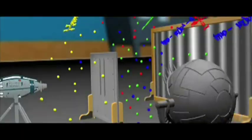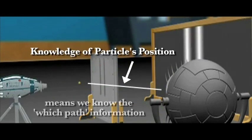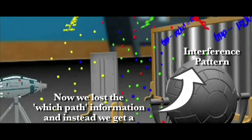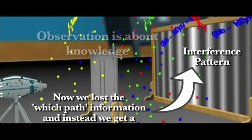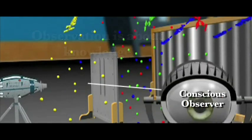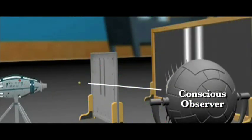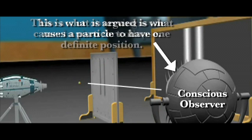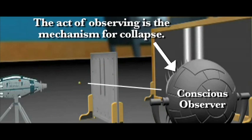Once we have the knowledge of the particle's position, we know the which-path information, and this causes a clump pattern instead of an interference pattern. See, observation is about knowledge, a conscious observer having knowledge of this system, and this is what is argued is what causes the particle to have one definite position. The act of observing is the mechanism for collapse.